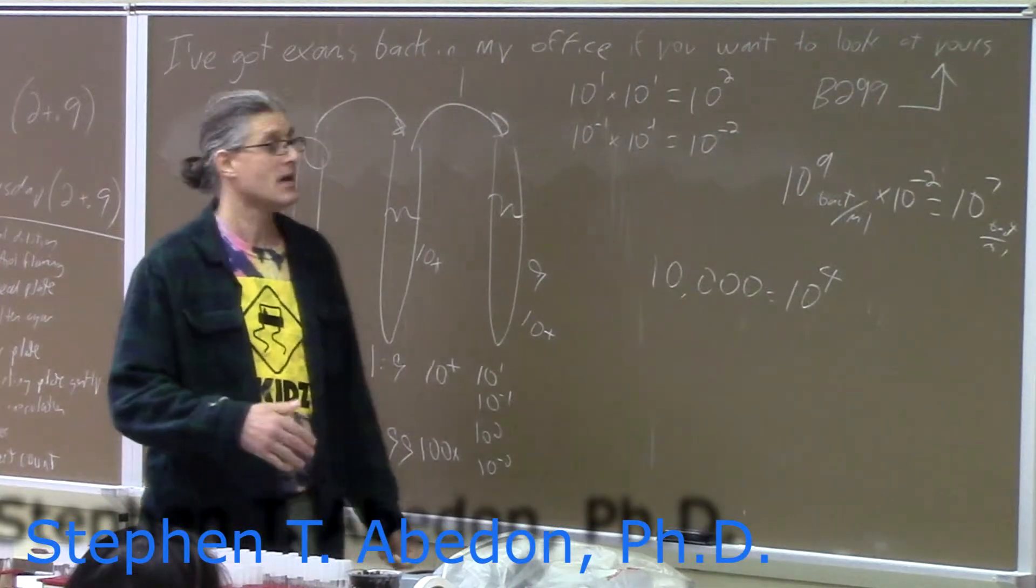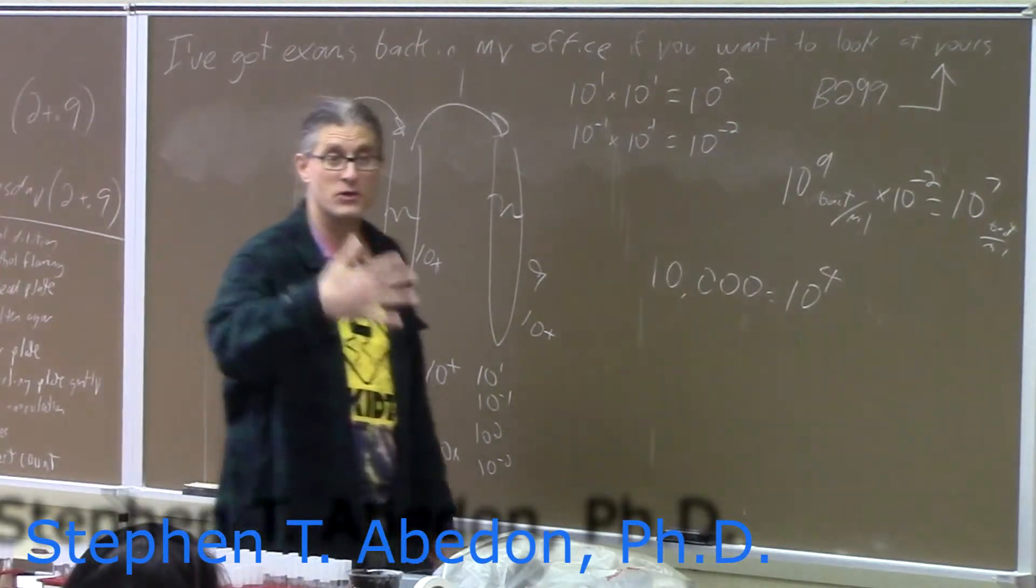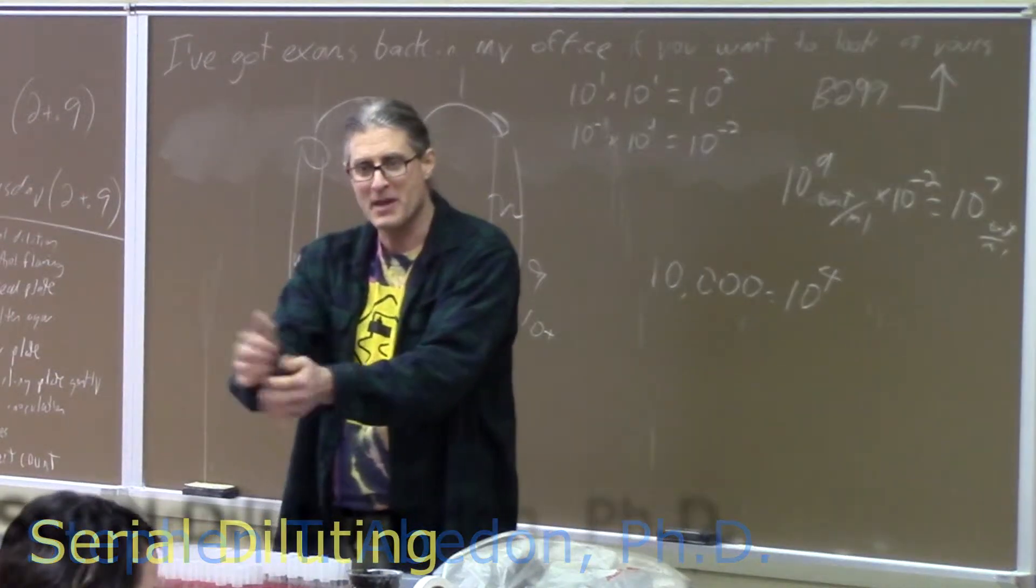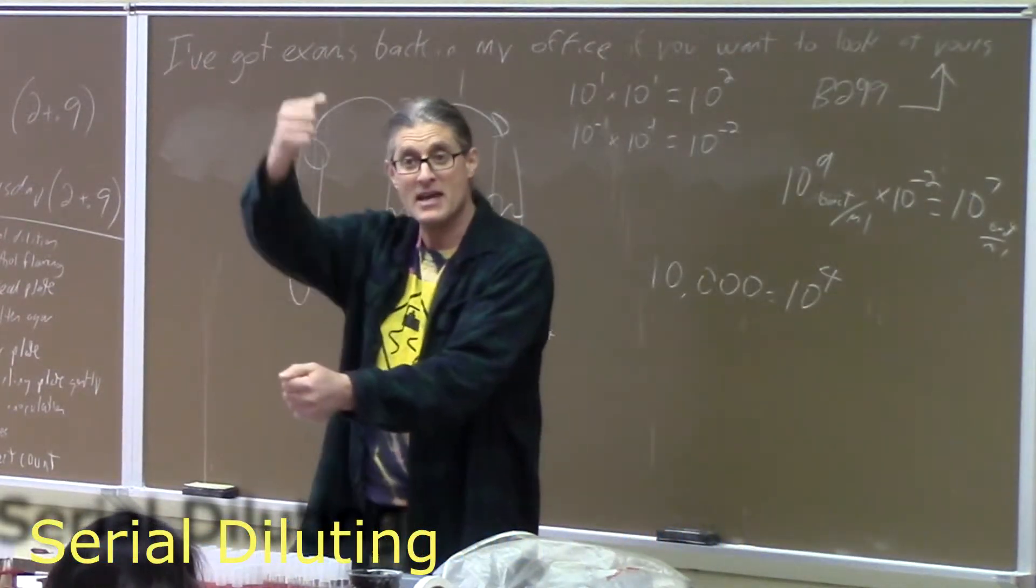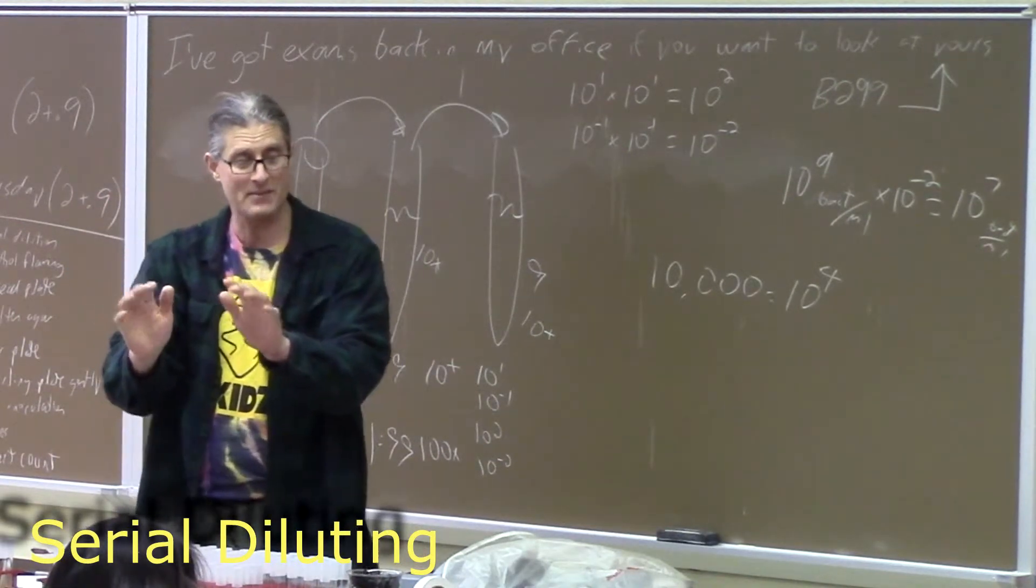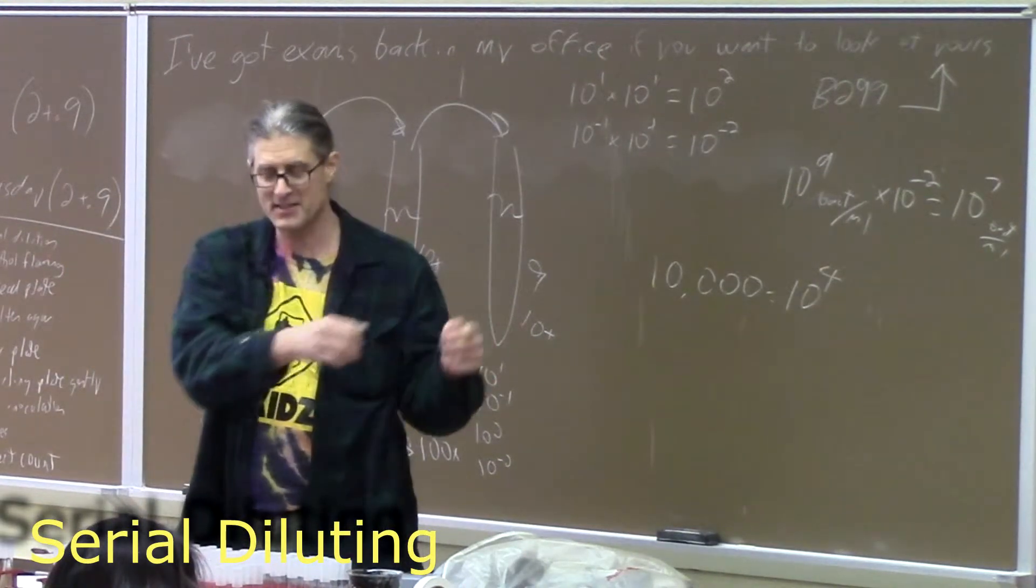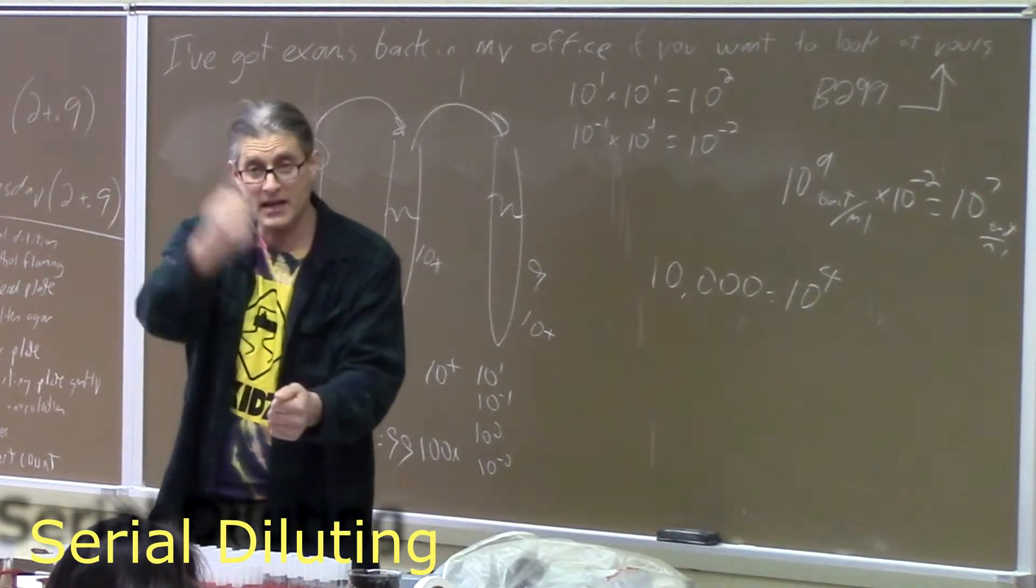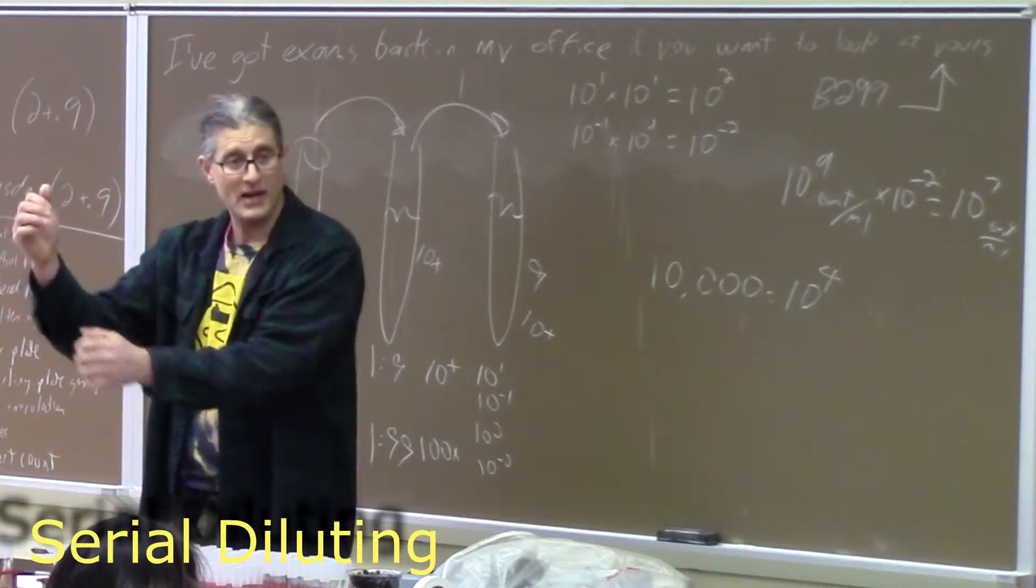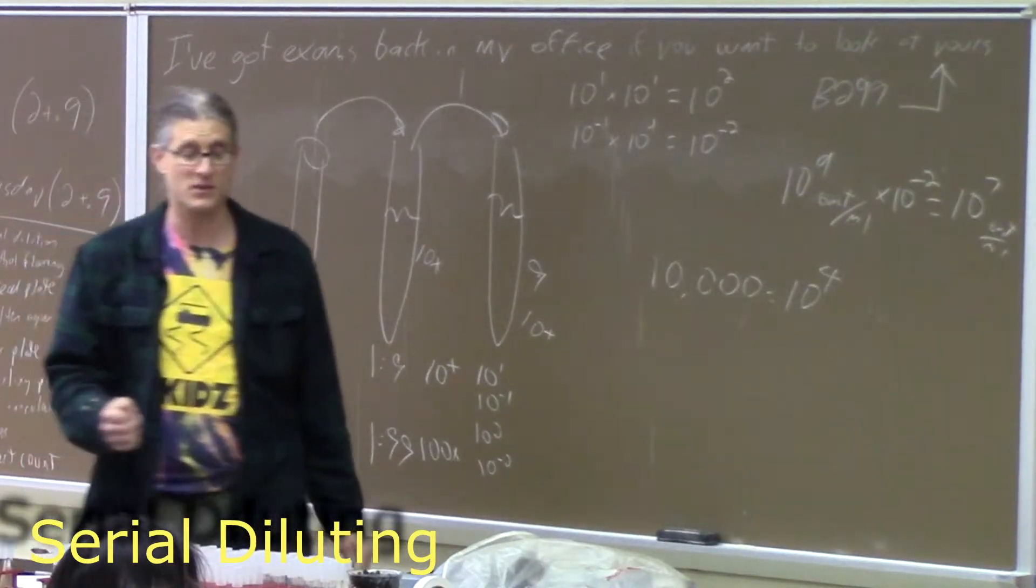So what we're going to be doing is serially diluting cultures, taking a volume, putting it into a larger volume, making sure that volume's mixed, taking out another volume with a new transfer device so that you're not contaminating with the higher concentrations you started with. Taking out a second volume, putting it in this third tube, making sure it's mixed, taking out a third volume, putting it in a fourth tube, and so on and so forth.